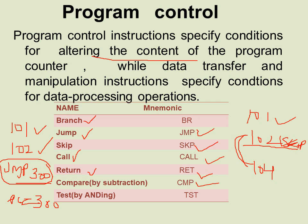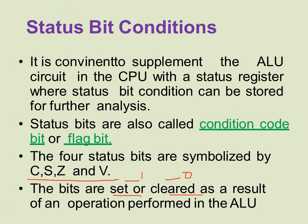The test instruction performs a logical AND of two operands and updates certain status bits without retaining the result or changing the operands. There are four status bit condition code flag bits: C for carry, S for sign bit, Z for zero, and V for overflow.